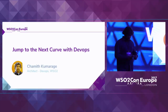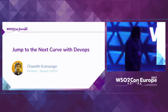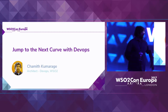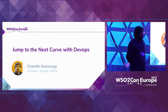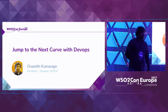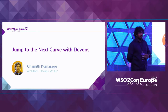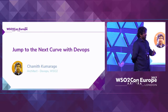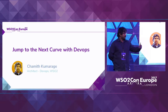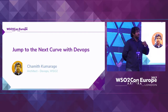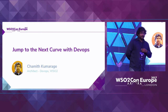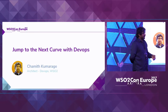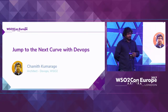Today I'll be talking about how you can use DevOps to jump to the next curve from where you are. If you do not have DevOps already running at your organization and if you are running conventional operations — in other words, routine operations — how you can jump to the next curve, and how we did that at WSO2. I'll be sharing my experience, the technologies and tools we used.